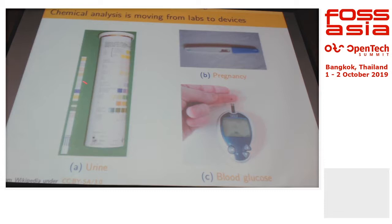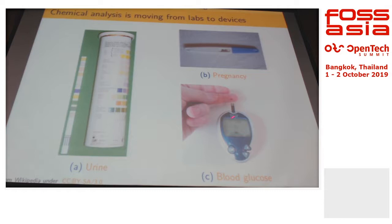The pregnancy test has a woman put a sample in — if a bar appears, she's pregnant; if not, she's not. It measures proteins present in the body. The glucose sensor for diabetic patients is more complex because it requires an electronic component that delivers a resulting number of how much glucose you have in your blood. In these devices, the sample either stays still or moves in one direction.